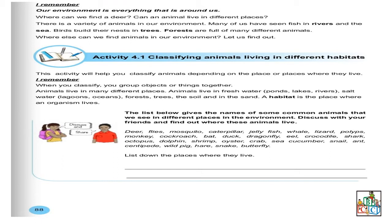Il y a plusieurs types d'animaux dans notre environnement. Many of us have seen fish in rivers and the sea. Beaucoup d'entre nous ont vu des poissons dans la rivière et aussi dans la mer. Birds build their nests in trees. Les oiseaux font leur nid dans les arbres. Forests are full of many different animals. Les forêts sont remplies de différents types d'animaux. Where else can we find animals in our environment? Où est-ce qu'on peut trouver d'autres types d'animaux dans notre environnement? On nous a dit par rapport aux arbres, à la mer, la rivière et les forêts. Mais quels sont d'autres types d'animaux où on peut trouver dans notre environnement?